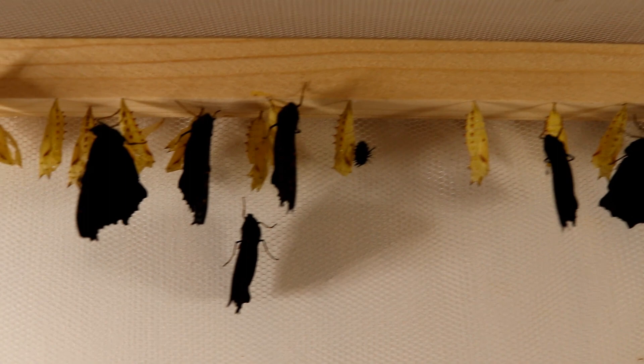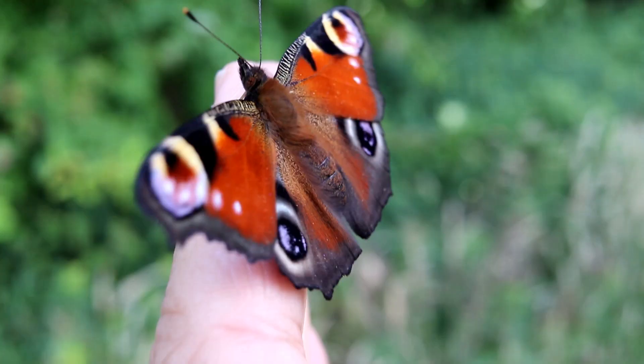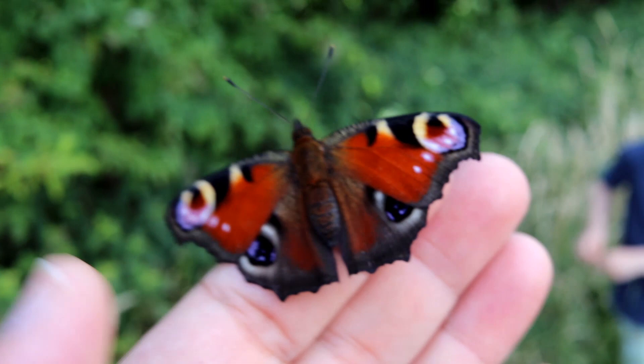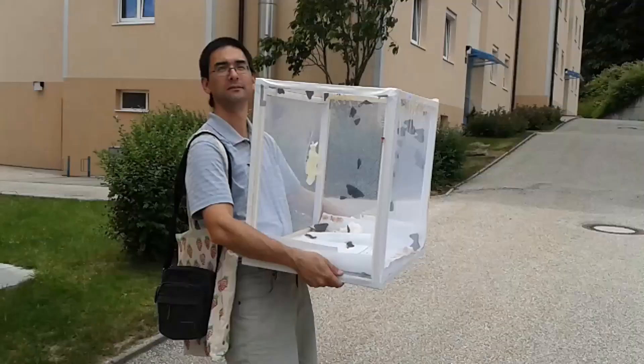Later on, they started to fly around in the cage, and that's of course the time when we had to release them. This is how it looks like - it's a so-called European peacock, a very nice looking butterfly, also relatively common. But butterflies are now not as common as they used to be with all the environmental problems and loss of habitat. Here you can see me take the carrier cage to the car for the butterflies to be released.